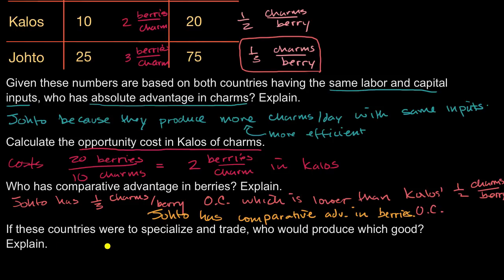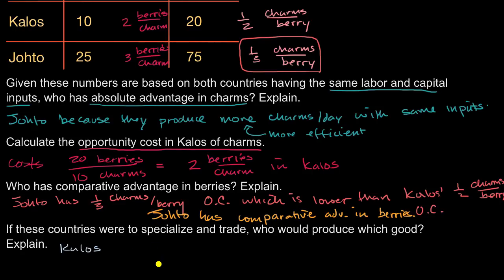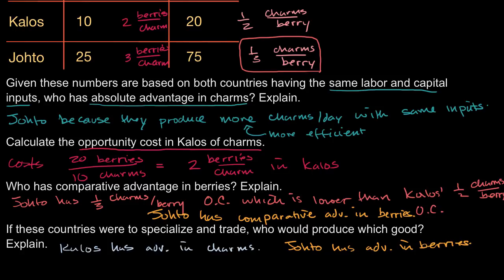If these countries were to specialize and trade, who would produce which good? Whoever has the comparative advantage in each good will produce it. Kalos has the lower opportunity cost for charms, so Kalos has the comparative advantage in charms. Johto has the comparative advantage in berries. So Kalos produces charms and Johto produces berries.